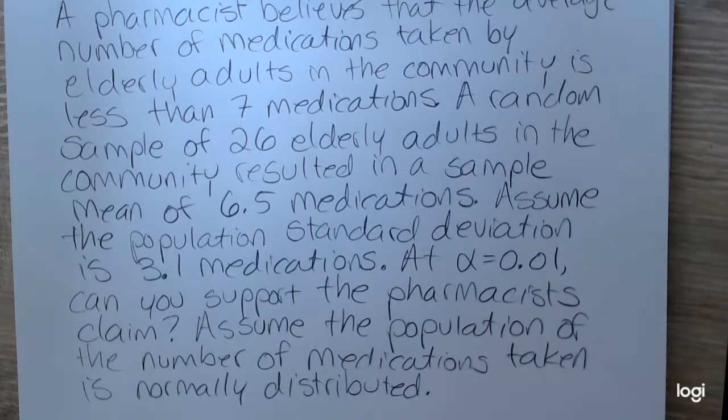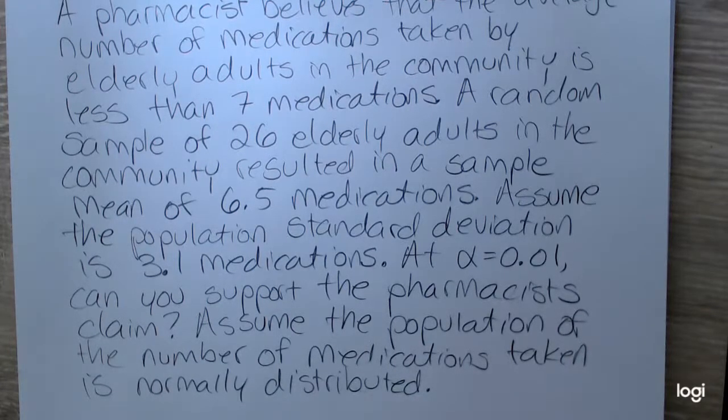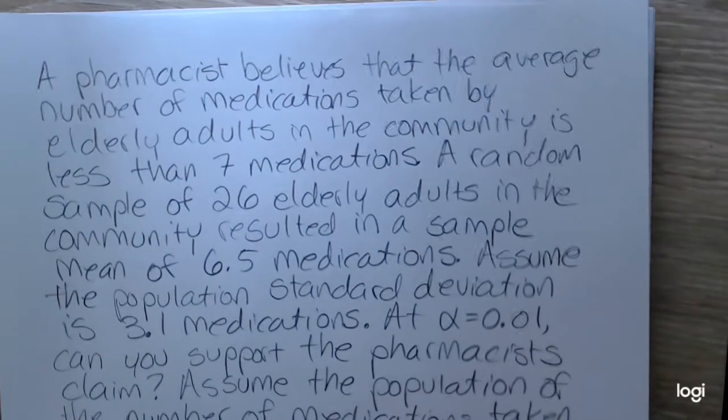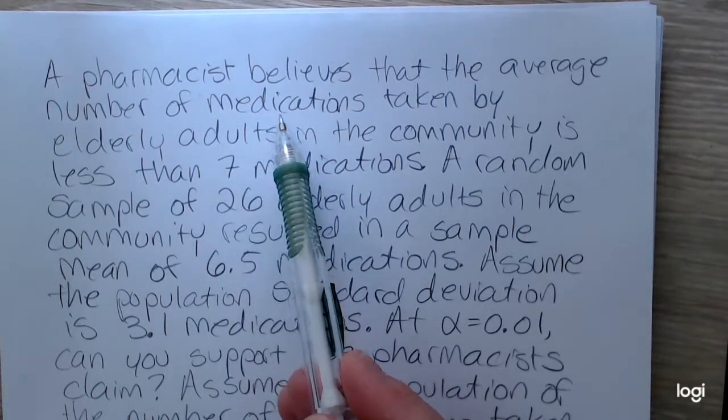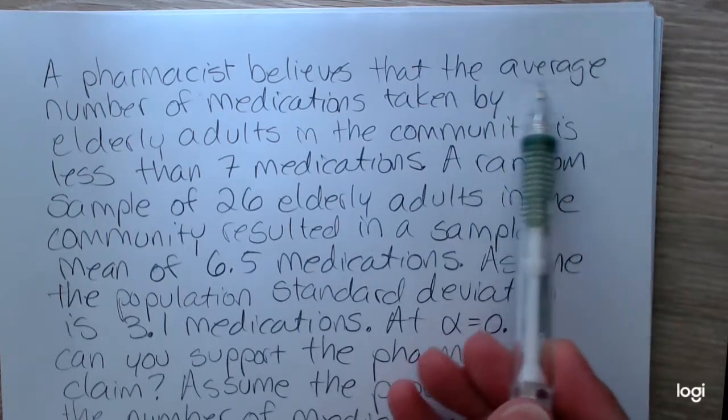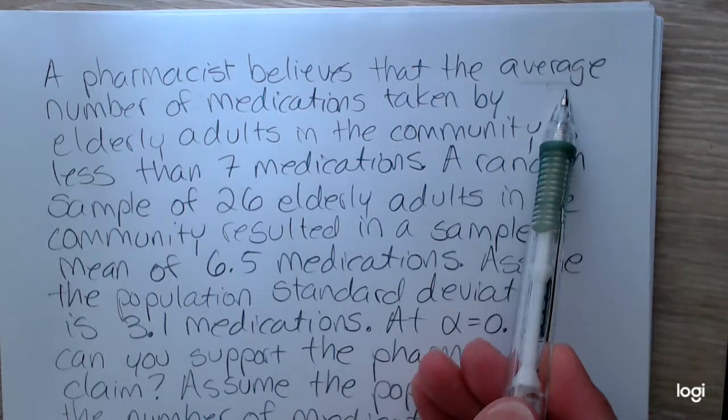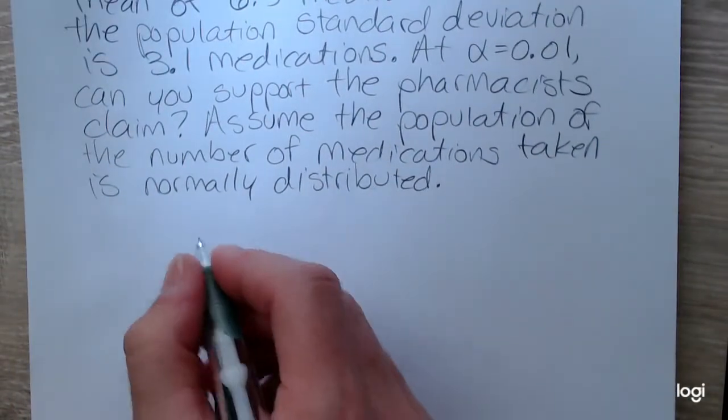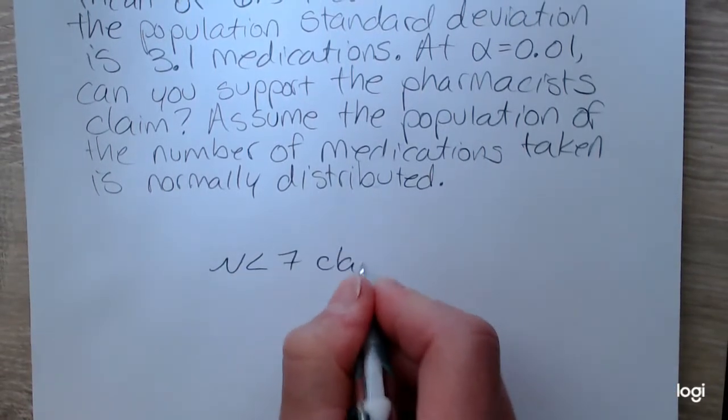Alright, so at this point in the course, you should remember that the first thing you want to do is identify the claim and write it in terms of the population parameter and then set the null and the alternative around that. So here's the claim. The pharmacist believes that the average number of medications, average, okay, there's a clue, that the parameter is mu. So the average is less than seven. So writing that as a mathematical statement in terms of mu, I have mu less than seven. So this is the pharmacist claim.